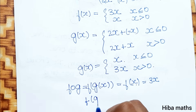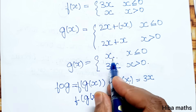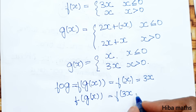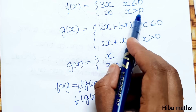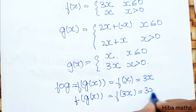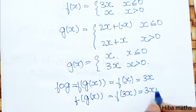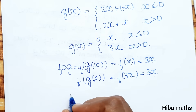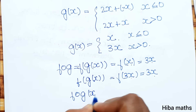So in one condition, f of g of x gives 3x. When x is greater than 0, g of x is x, and applying f gives x. So f of g of x is equal to 3x for x less than or equal to 0, and x for x greater than 0.